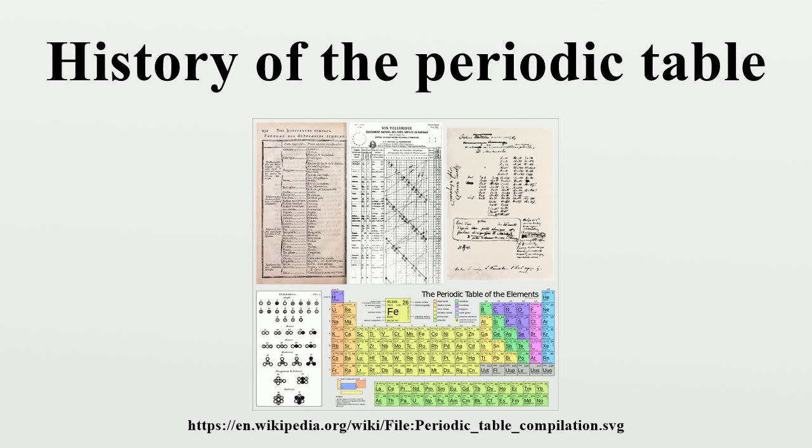However, the notion that there were a limited number of elements from which everything was composed originated in around 330 BCE, when the Greek philosopher Aristotle proposed that everything is made up of a mixture of one or more roots, an idea that had originally been suggested by the Sicilian philosopher Empedocles.